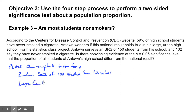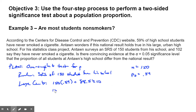Large counts time. N equals 150, P-null equals 0.59. Do N times P: 150 times 0.59 gives 88.5, which is greater than or equal to 10. Then 150 times 1 minus 0.59 gives 61.5. Both are greater than or equal to 10, so we are good to go.